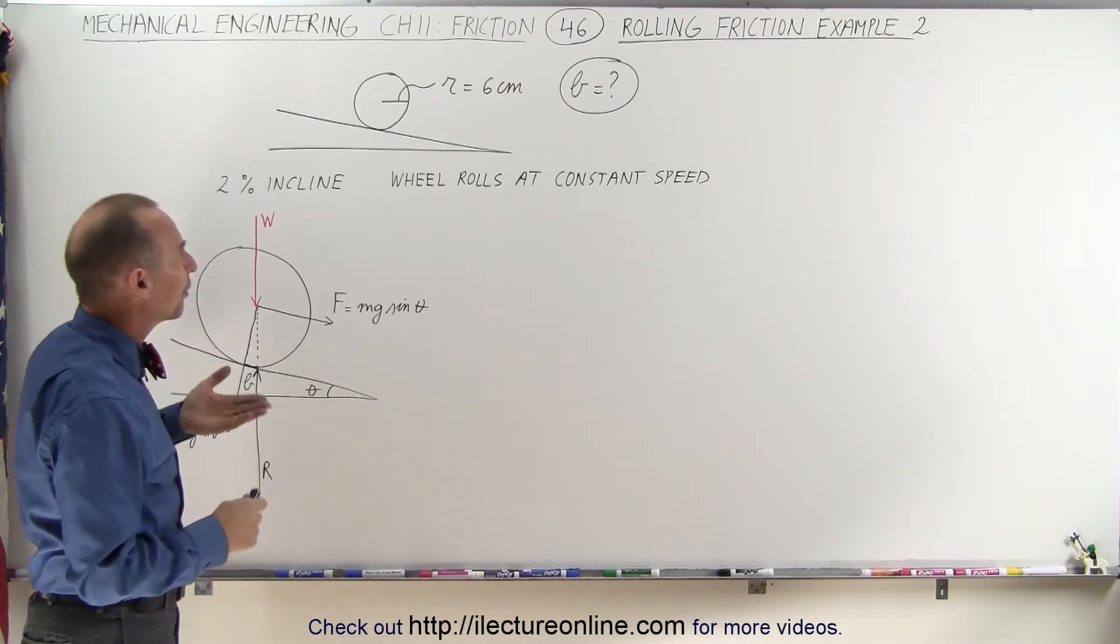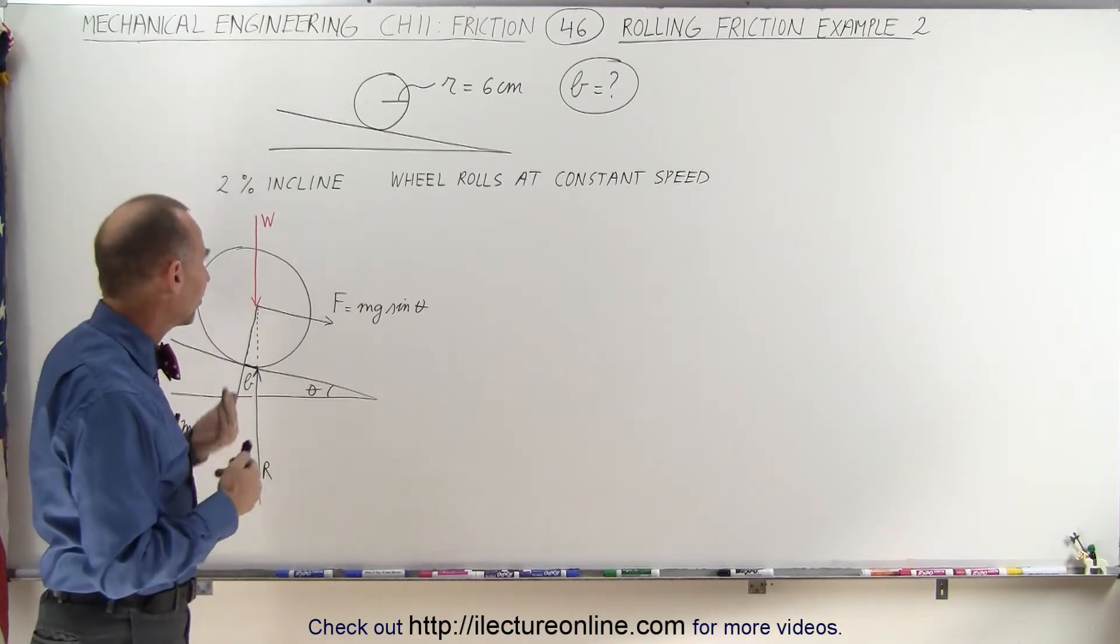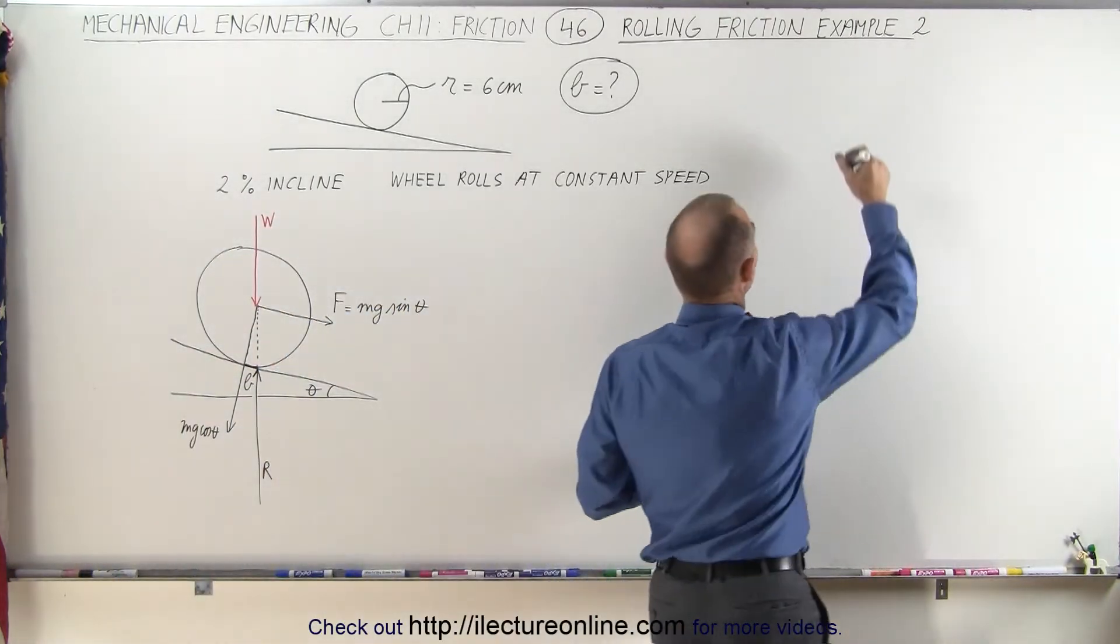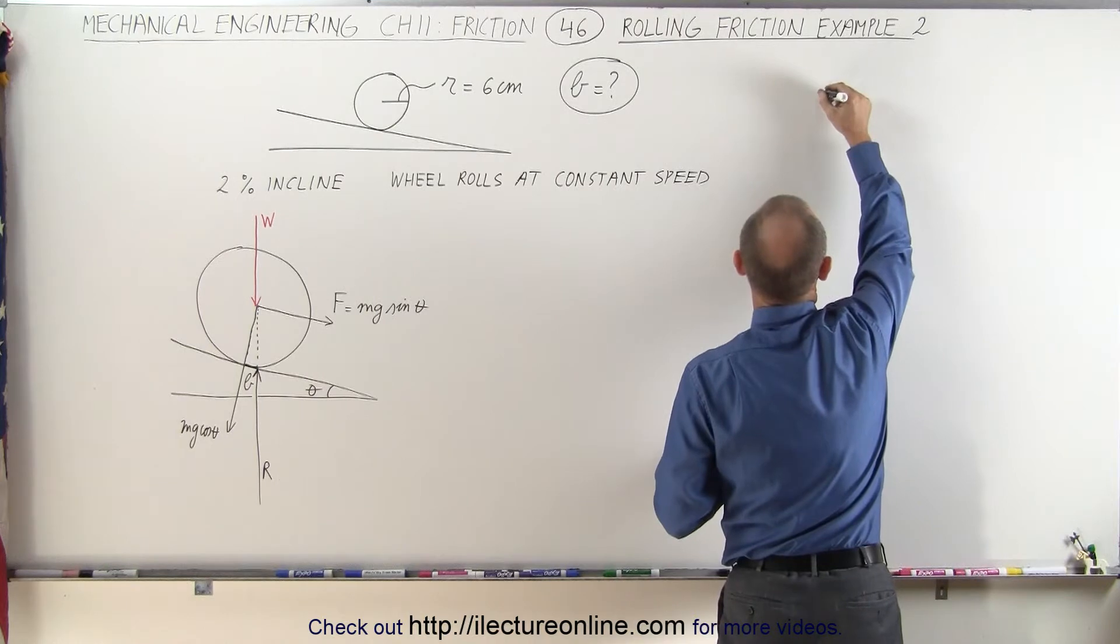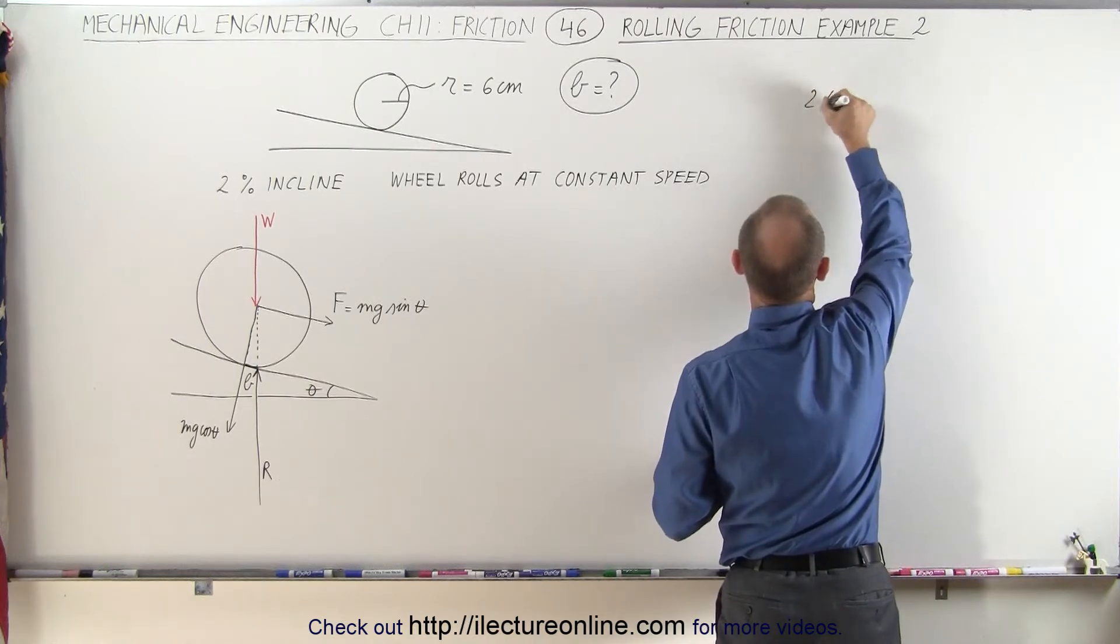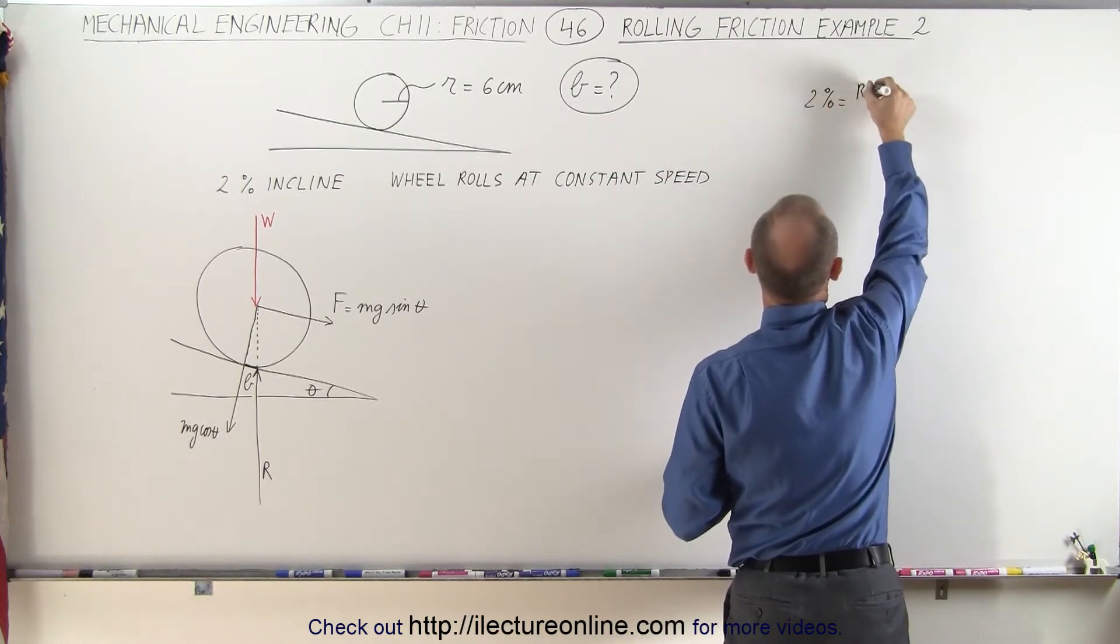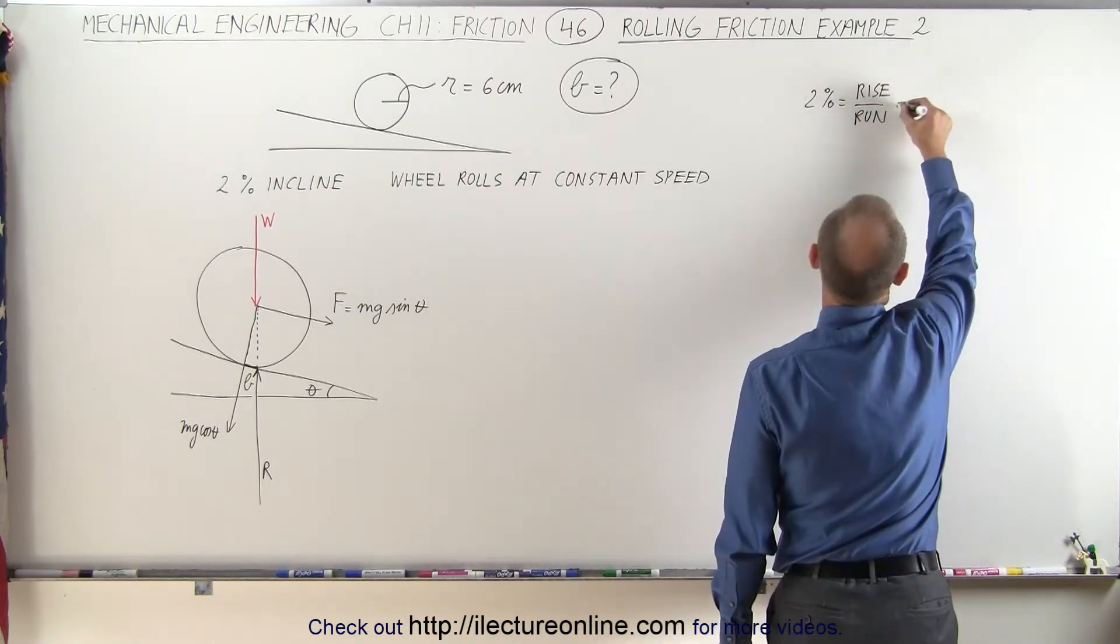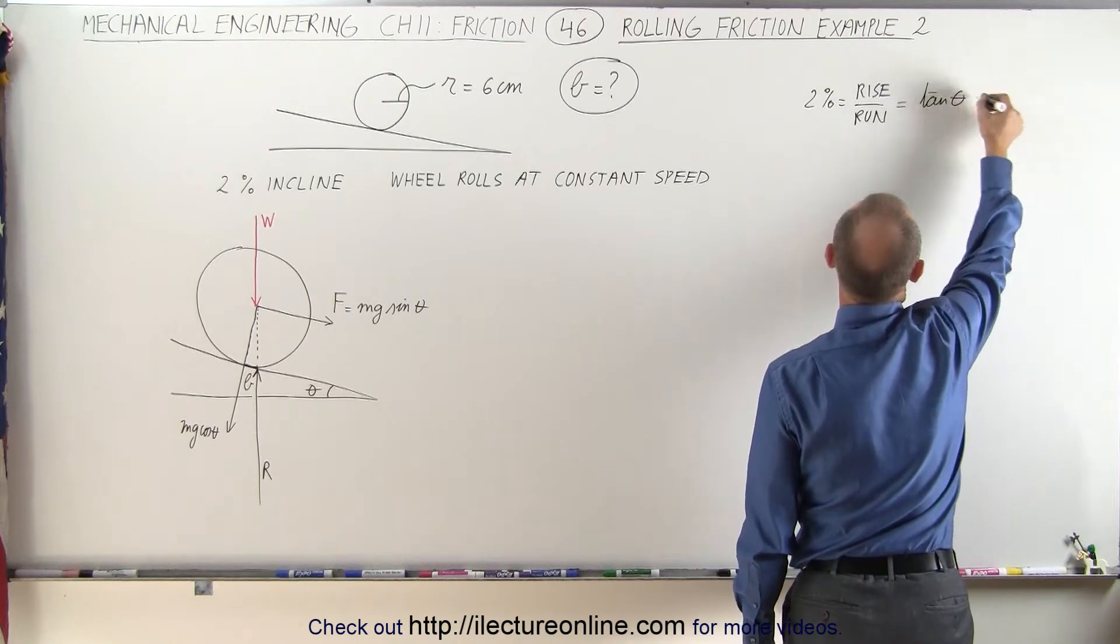Now a 2% incline is a very small incline, and so let's find out first what that is in degrees. We know that the percent incline is the rise over the run, so 2% is equal to the rise over the run, which is the definition of the tangent of theta.